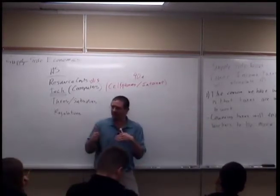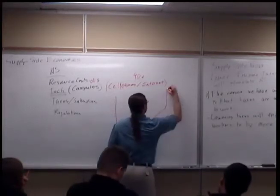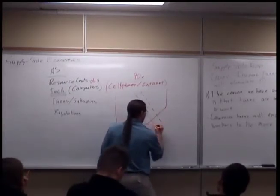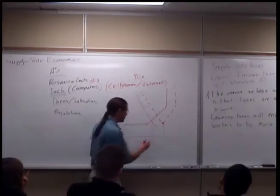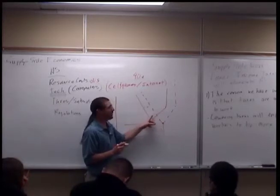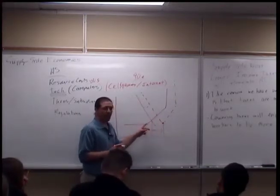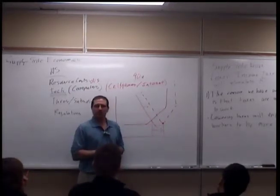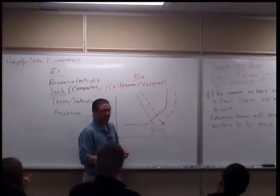If aggregate demand shifts a little bit to the right and aggregate supply shifts a little bit to the right with it, what might happen? No change in CPI — but a huge change in GDP. This is exactly what supply-side economists are saying: maybe there will be a little growth in aggregate demand, but the growth in aggregate supply will make up for it, so prices won't go up, we won't see any inflation, and we get this huge bonus in GDP — if we just give people the incentive to work.